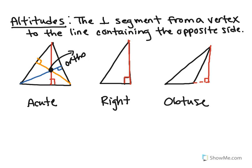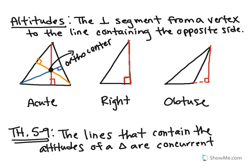The point of concurrency for altitudes is called an orthocenter. There's nothing particularly special about it — I can't make a circle, or claim one segment is a certain fraction of another. It's just called an orthocenter. Theorem 5-9 states that the lines containing the altitudes of a triangle are concurrent, forming a point of concurrency called the orthocenter. That concludes this tutorial.